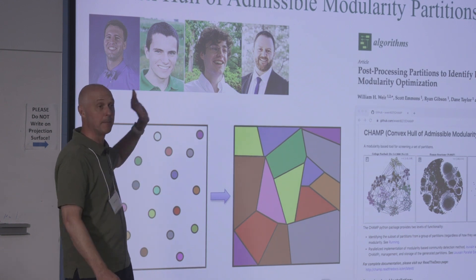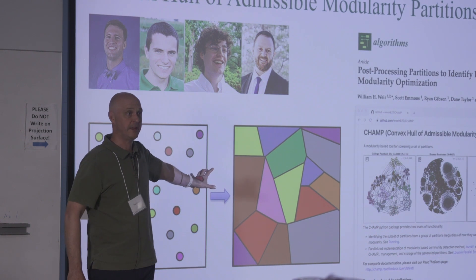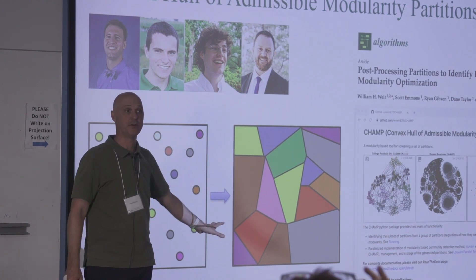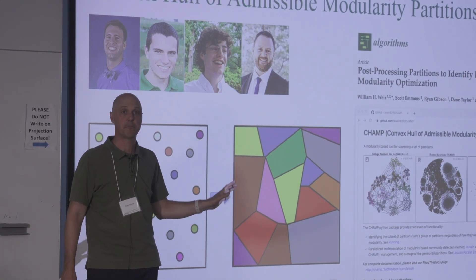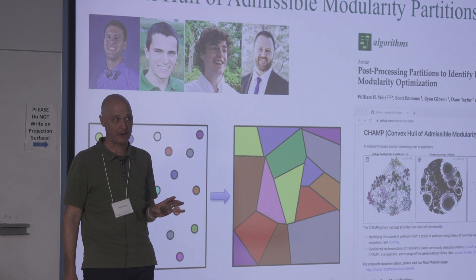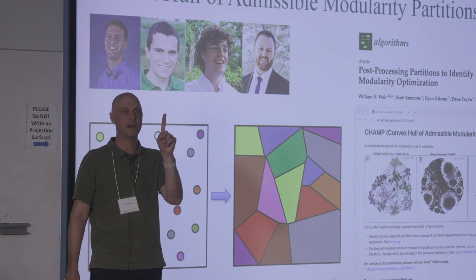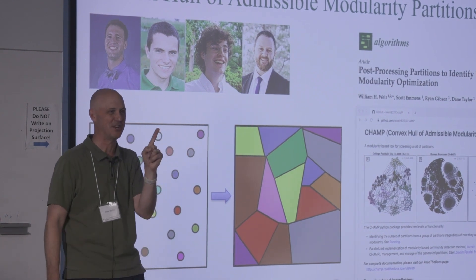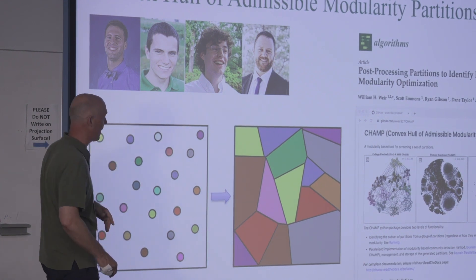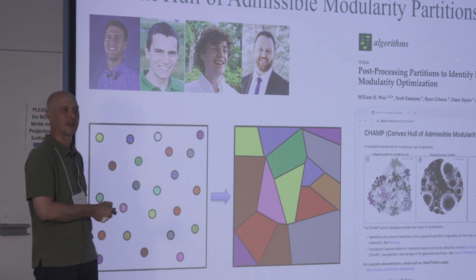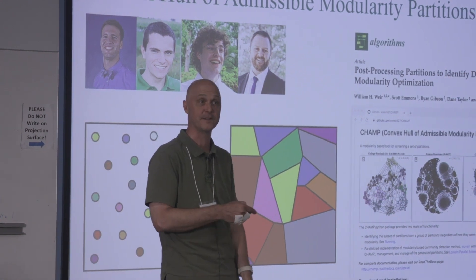What we did in this paper a few years back is try to give you a way to post-process those answers within this modularity context. We're completely agnostic about how you got your communities — we can take any set of partitions and post-process them based on the notion of modularity. We developed this CHAMP method — the Convex Hull of Admissible Modularity Partitions. It's got a much better name than 'iterative parameter space mapping', which I still need help with.